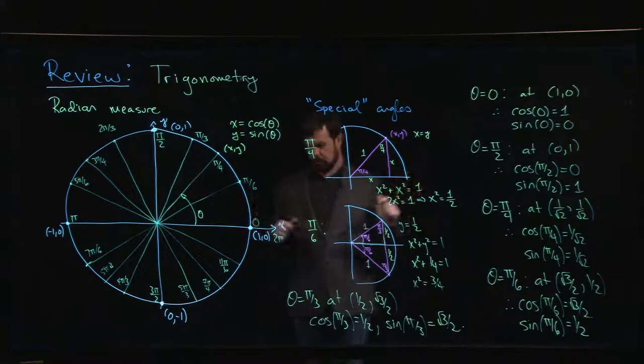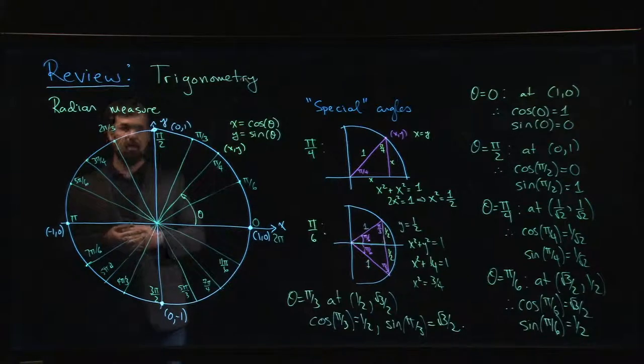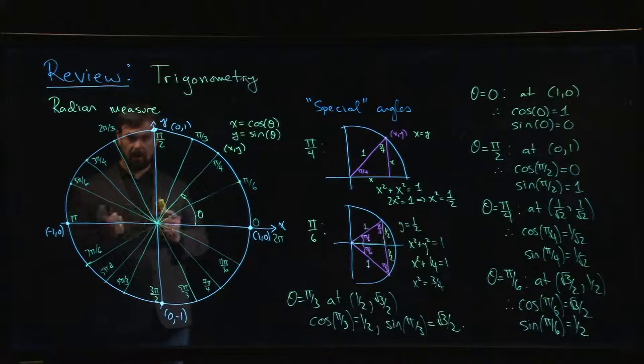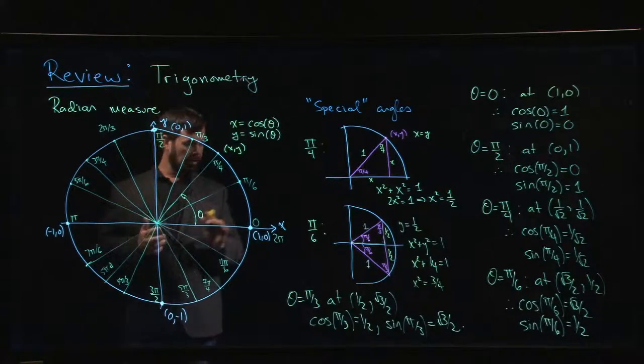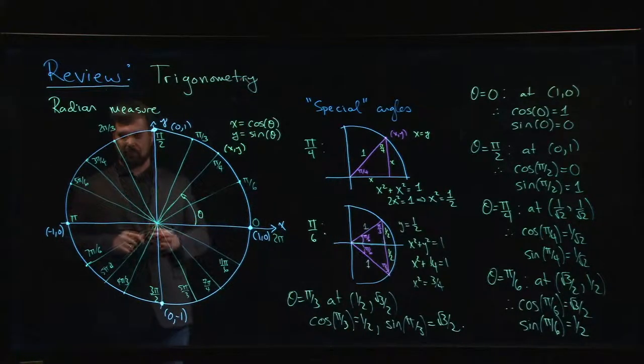So those are the basic first quadrant values that you want to know when you're doing trig, working with the unit circle. Pretty much everything else you're going to have to either rely on trig identities or use your calculator to get values for other angles. These are the only ones that are kind of easy to work out. Everything else takes a little bit more effort.